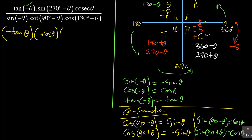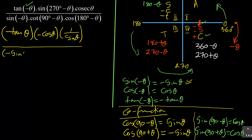So sin(270 − θ) is multiplied by −cos θ. The next term is cosec, and cosec remember is 1 over sin θ — that is what we have on top. Over that we have sin(−θ), which for negative angles is −sin θ.